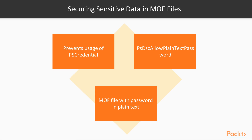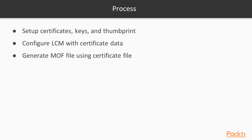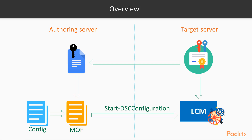A nice solution to this problem will be to use certificates to encrypt the contents of the MOF file, and then configure the local configuration manager in the target node to decrypt the contents while enacting the configuration. To successfully encrypt the credentials used to secure a DSC configuration, we need to set up the certificates, keys, and thumbprints, making sure that each target node has copies of the certificate and the configuration computer has the thumbprint and the public key. We need to ensure that the local configuration manager configuration data contains the information of the thumbprint of the certificate to decrypt the contents of the MOF file. Finally, we need to create a configuration with credentials and use the public key file to generate the encrypted MOF file. Before we go into the demo, let's have a quick look at the overview of the entire process.